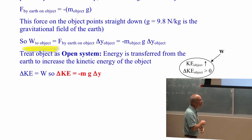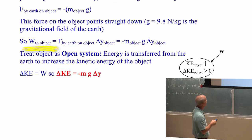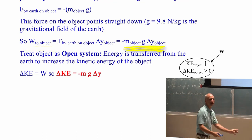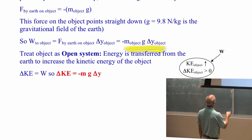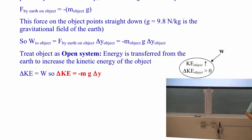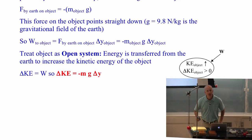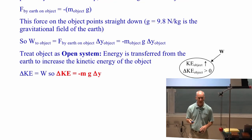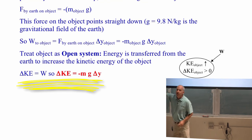So the work — the energy added by that interaction with the earth — is the force by the earth times the distance it moves. That's work: force times the distance it moves. The distance it moves is delta y, since y is the vertical variable, the height of the object. The force is negative mg and the change in height — that's the work done. If this is an open system, the energy that changes when you do work on that object is visible because the object's moving faster. We don't have to worry about air resistance with a tennis ball moving fairly slowly, so the change in total energy is just the change in kinetic energy.